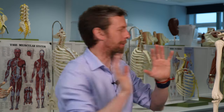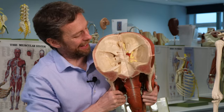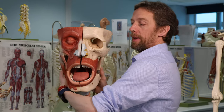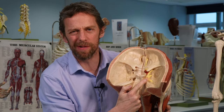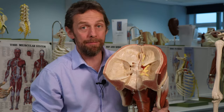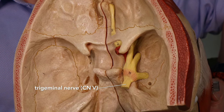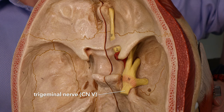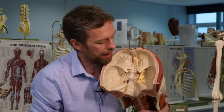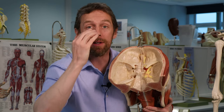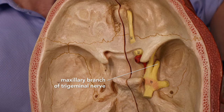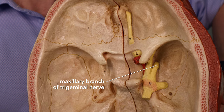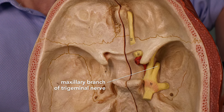Grabbing a big head model: that's anterior, and there is the trigeminal nerve — cranial nerve five — the main sensory nerve of the face. It has three big branches: ophthalmic, maxillary, and mandibular, running forward to carry sensory information from the skin of the face and innervate the muscles of mastication. The second branch is the maxillary branch.